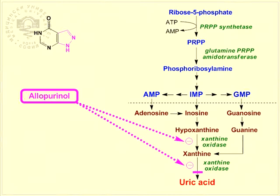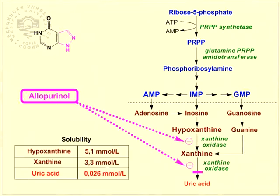After administration of allopurinol, the synthesis of the less soluble uric acid stops. The quantity of its precursors, xanthine and hypoxanthine, increases. They are much more soluble than uric acid and do not precipitate in the form of crystals. Besides being an inhibitor of xanthine oxidase, allopurinol also binds part of phosphoribosyl pyrophosphate, which is both an intermediate and an activator of the purine nucleotide synthesis de novo.